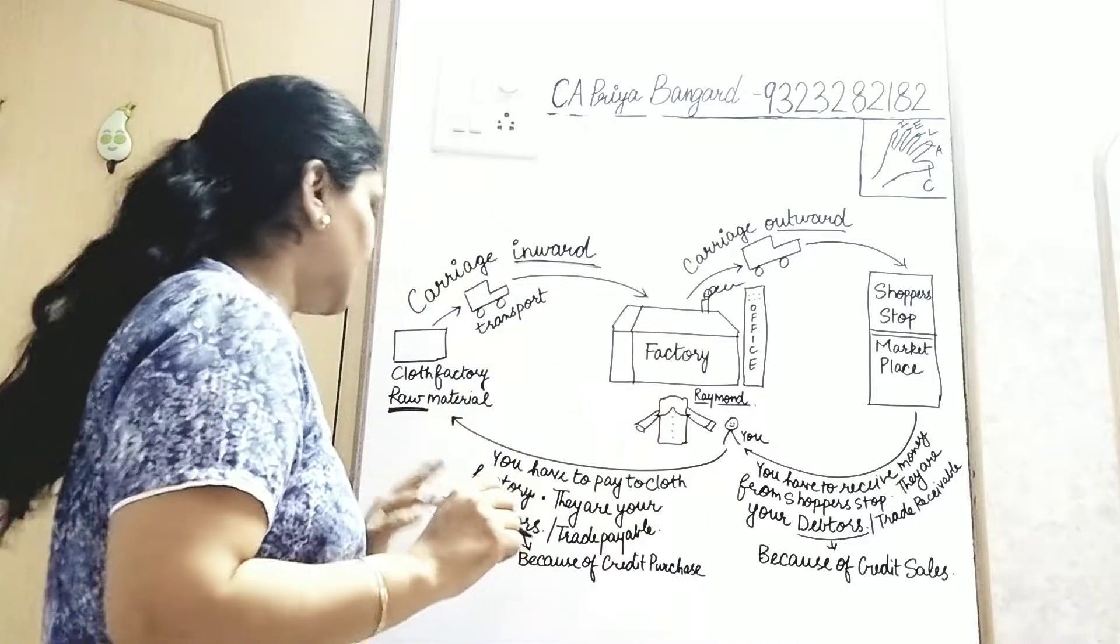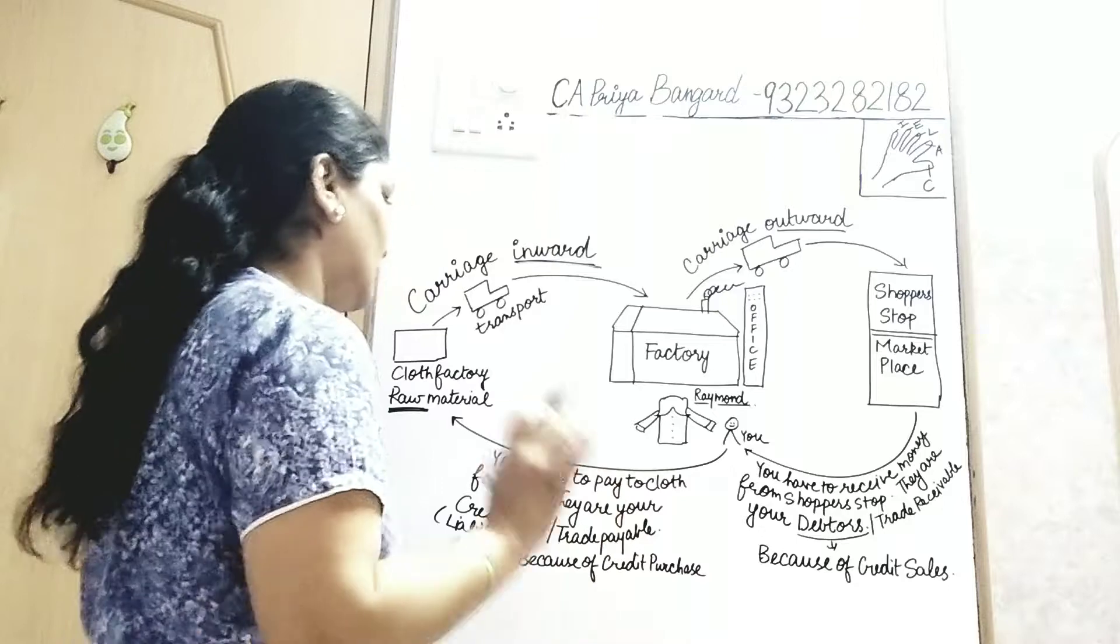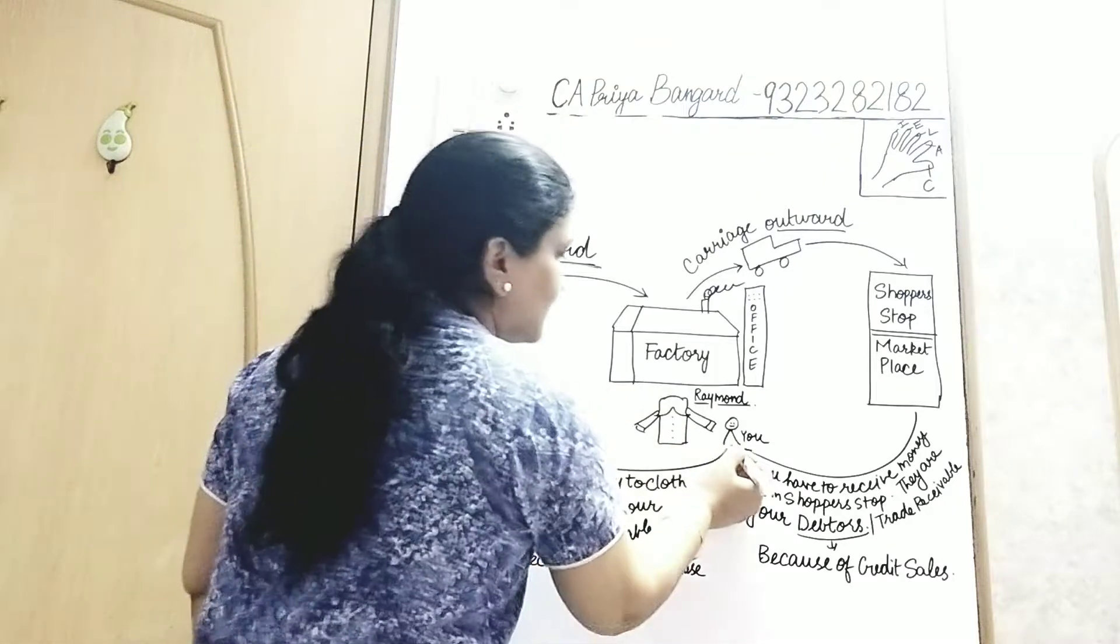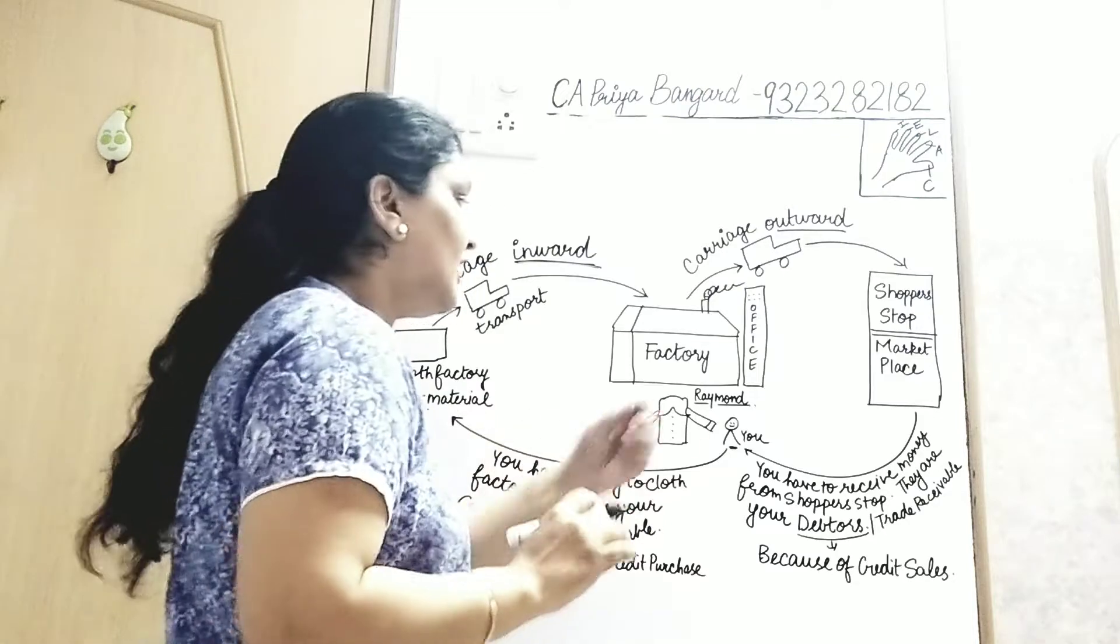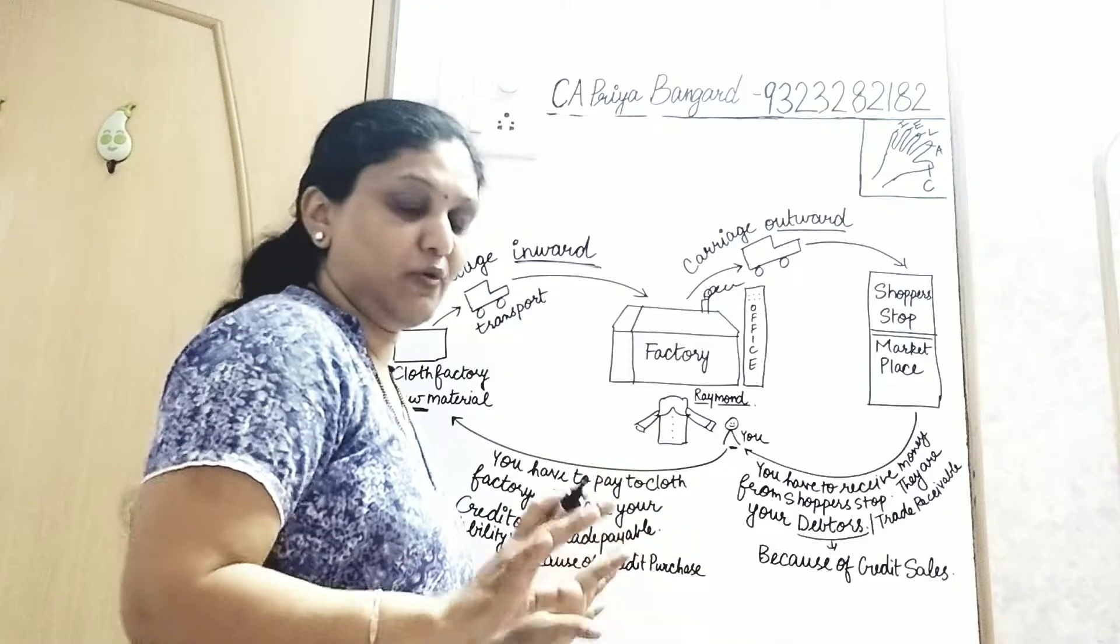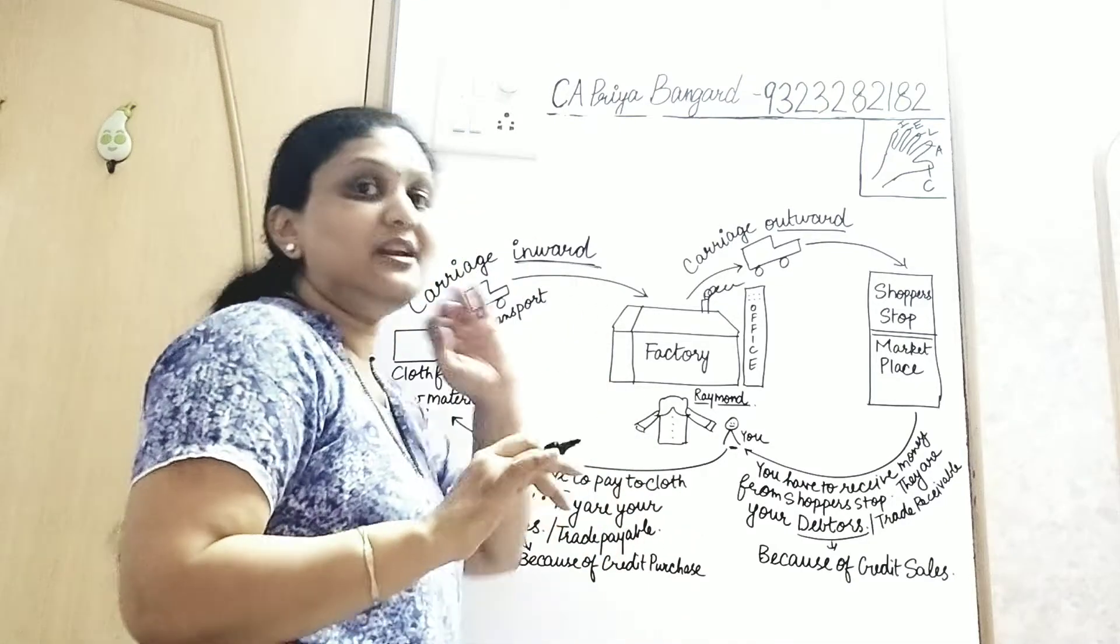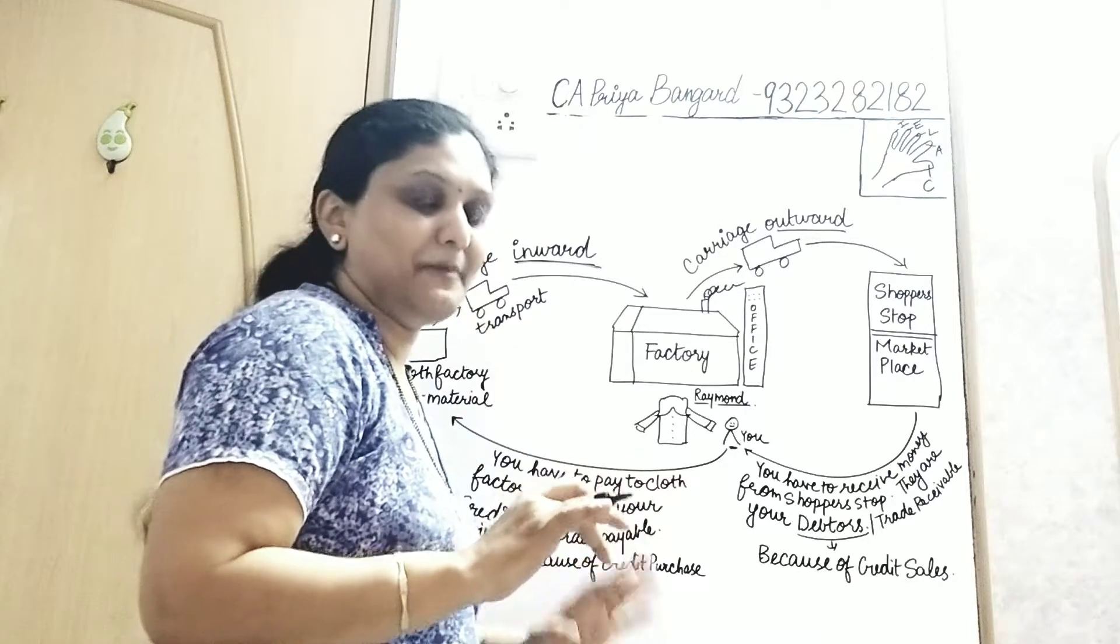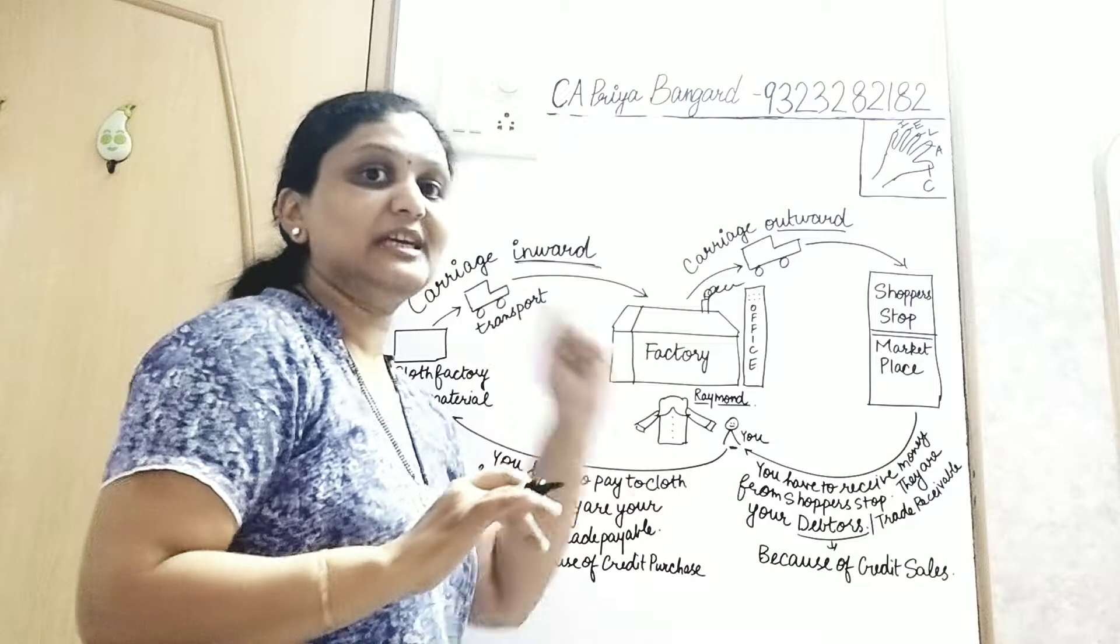Now, let us understand what is creditors and debtors - very, very important. If this is you, you bought raw material from the cloth factory. If you would have paid cash immediately, the transaction would be over. But in real business scenario, it is not like that. In 95% of the cases, you are not paying cash immediately. It is on credit.